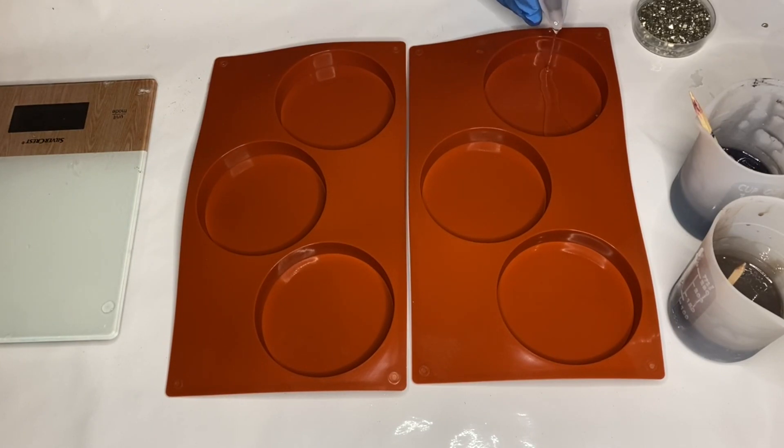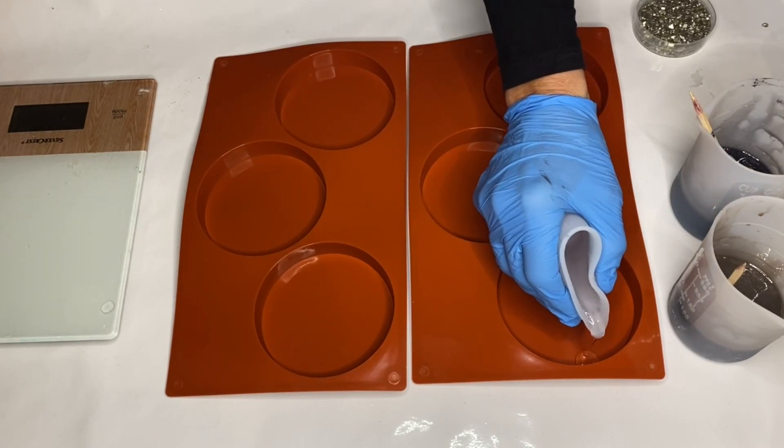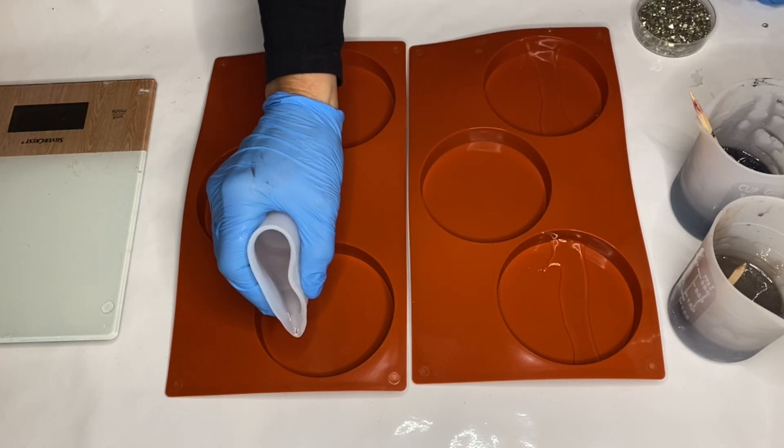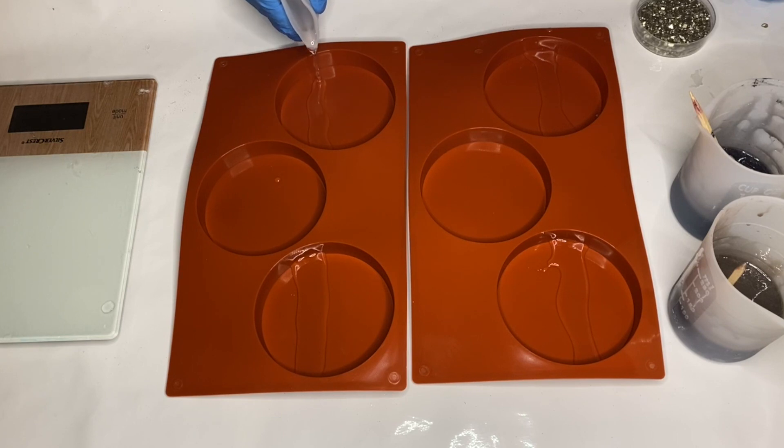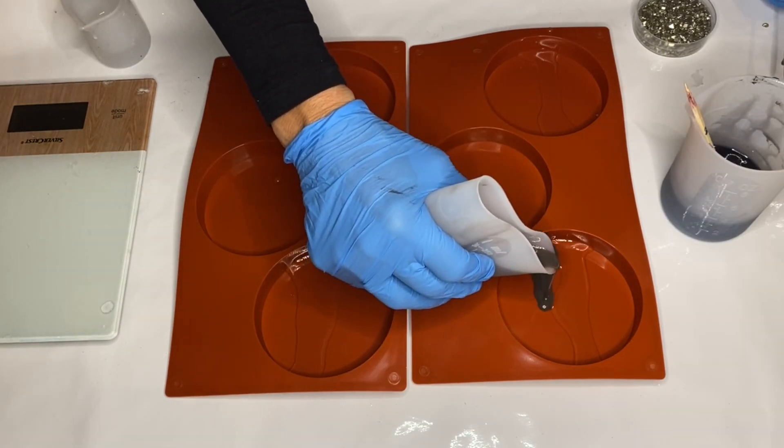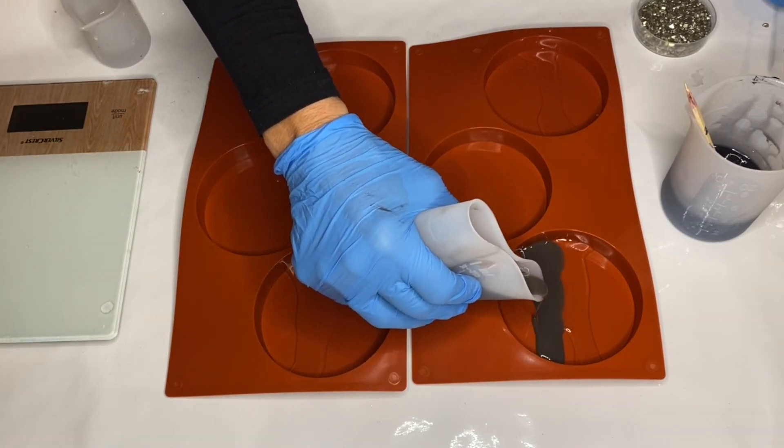The first thing that she's doing is adding clear resin down the middle, which is where these metallic rocks are going to go. She's also letting the charcoal and the taupe pigmented resin sit for a little bit so it gets a little thicker, so that way they won't blend into each other.